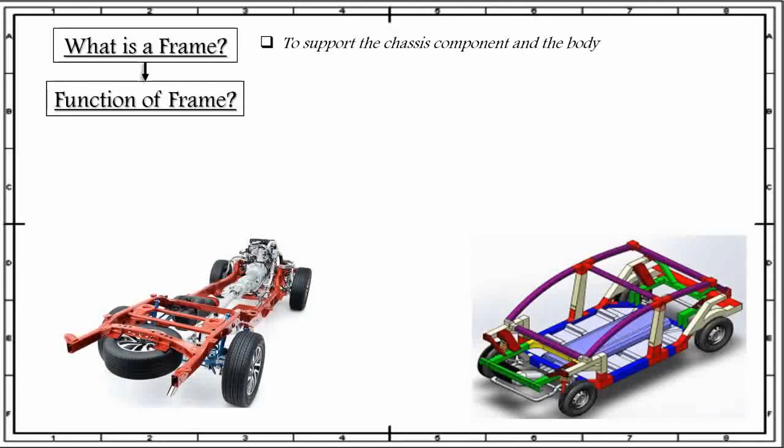Now what are the functions of a frame? The first function of a frame is to support the chassis components and the body. The chassis components like engine, wheels, radiator, transmission system consisting of clutch, gearbox, propeller shaft, suspension systems, steering systems, brakes, fuel tank, etc., are all supported on the frame.